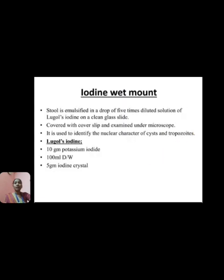Next is the iodine wet mount. A small amount of stool is emulsified into a drop of five-times-diluted Lugol's iodine solution on a clean glass slide, covered with a coverslip, and examined under the microscope. It is used to identify the nuclear characteristics of cysts and trophozoites. The Lugol's iodine composition: 10 grams of potassium iodide, 100 ml of distilled water, and 5 grams of iodine crystals.